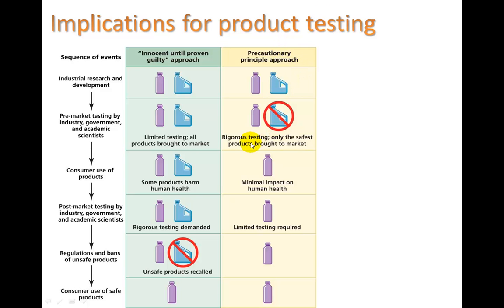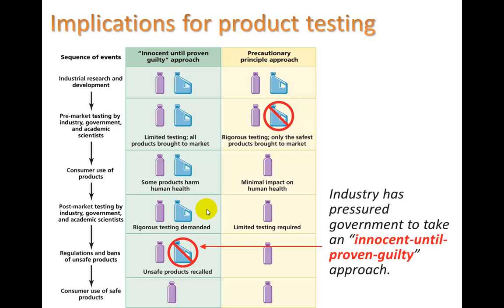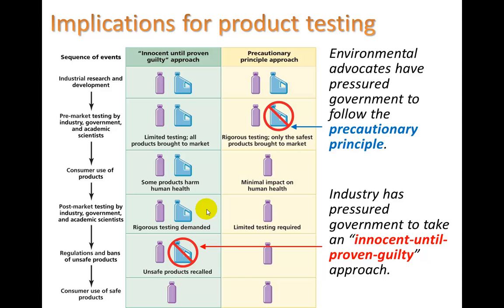With the precautionary principle, the same idea applies, but you do rigorous testing up front. Only the safest products are brought to market, allowing minimal impact on human health. Industry has often pressured government to take an innocent until proven guilty approach because it lets them get effective products to market faster. But environmental advocates have pressured government to follow the precautionary principle and do rigorous testing first. These you definitely need to know.